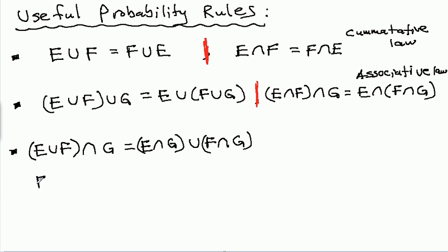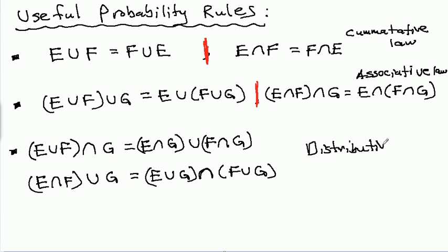And another scenario, the union of E intersect F with G can be rewritten as the intersection between E union G and F union G. These two are examples of the distributive or illustrations of the distributive law of probabilities of events.